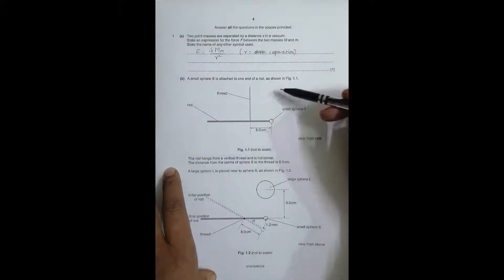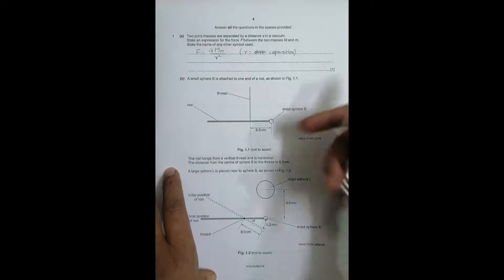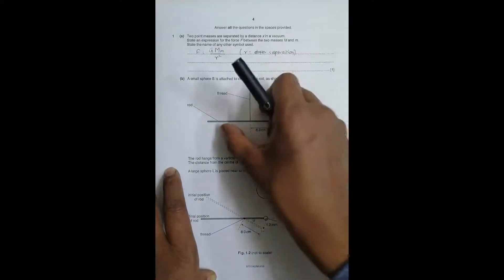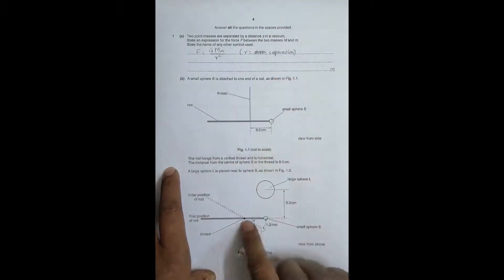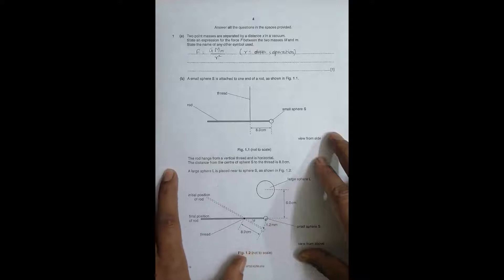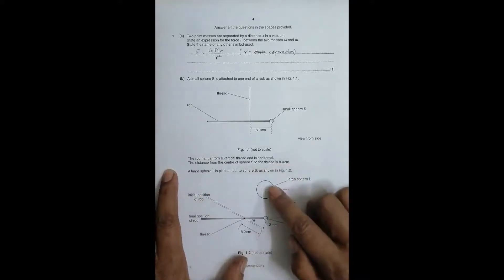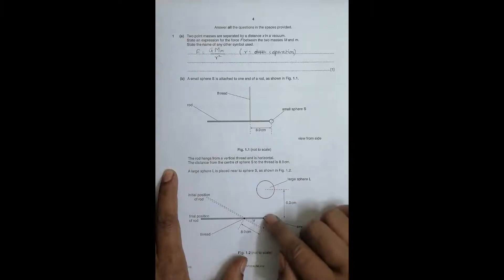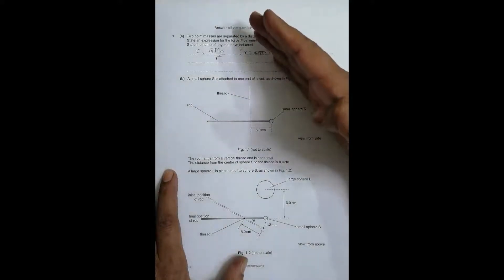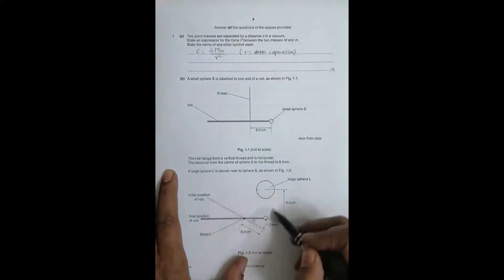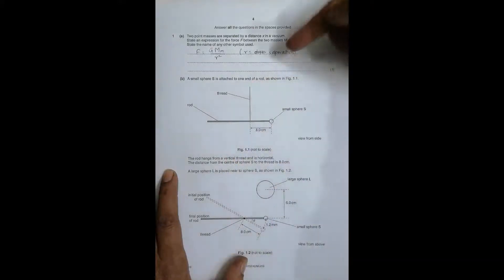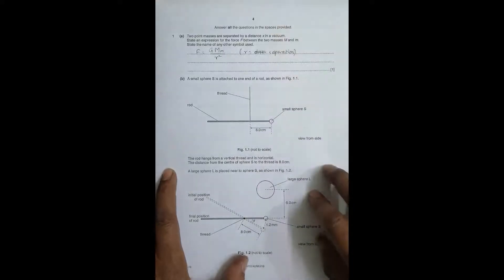A large sphere L is brought near sphere S as shown. Because of sphere L, the rod is pulled such that it rotates — this whole thing moves like this, and the thread, which was initially vertical, now becomes twisted. So initially the rod is horizontal and the thread is straight, and after the sphere is brought near, the rod rotates and the thread twists.